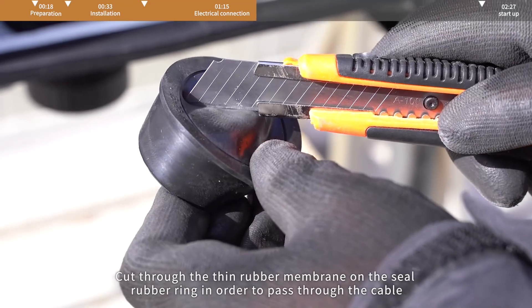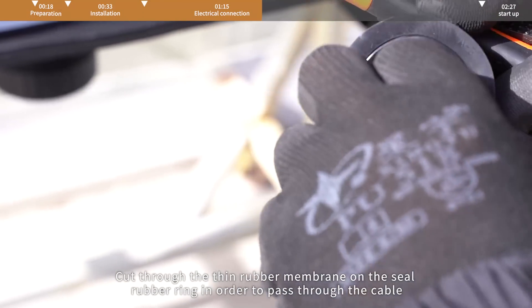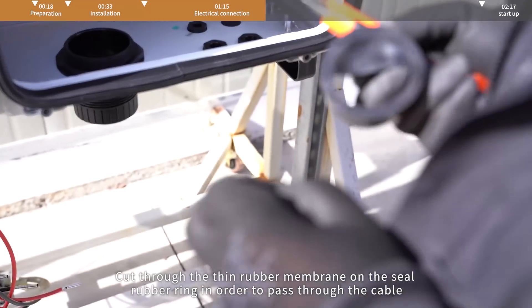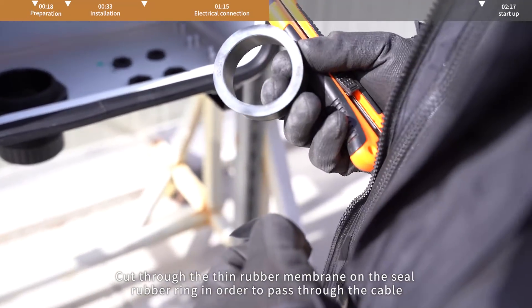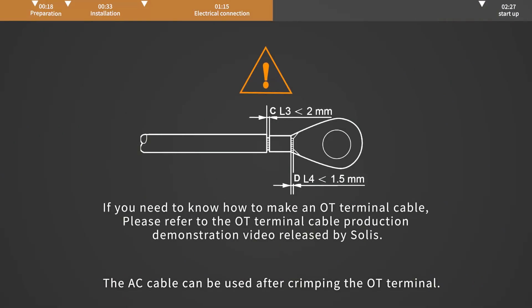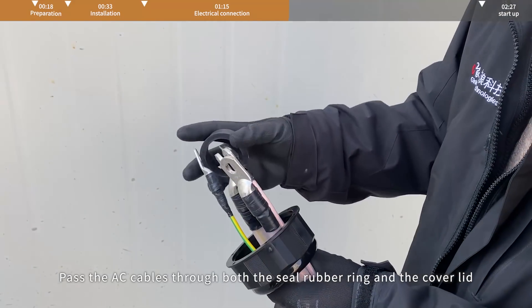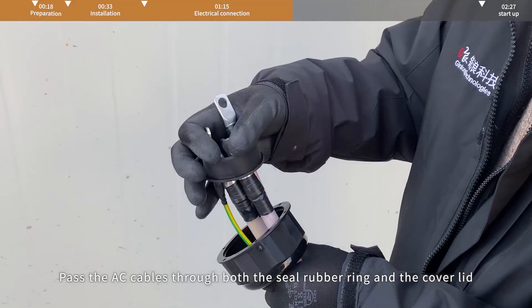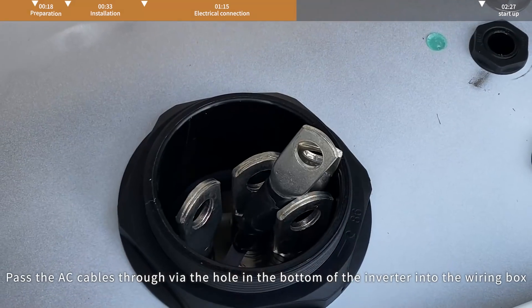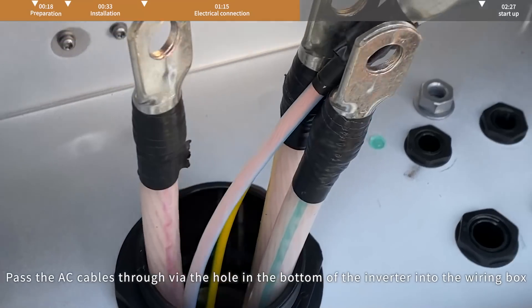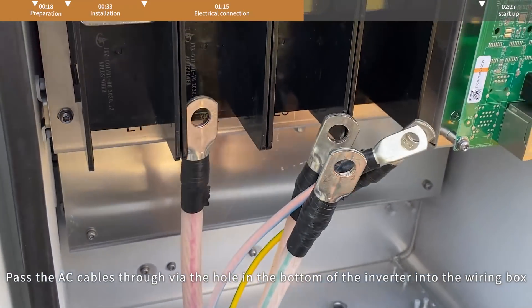Cut through the thin rubber membrane on the seal rubber ring in order to pass through the cable. The AC cable can be used after crimping the OT terminal. Pass the AC cables through both the seal rubber ring and the cover lid, then through the hole in the bottom of the inverter into the wiring box.